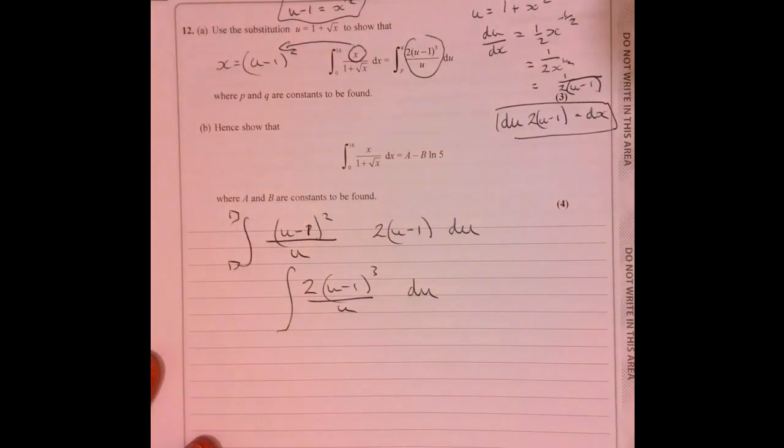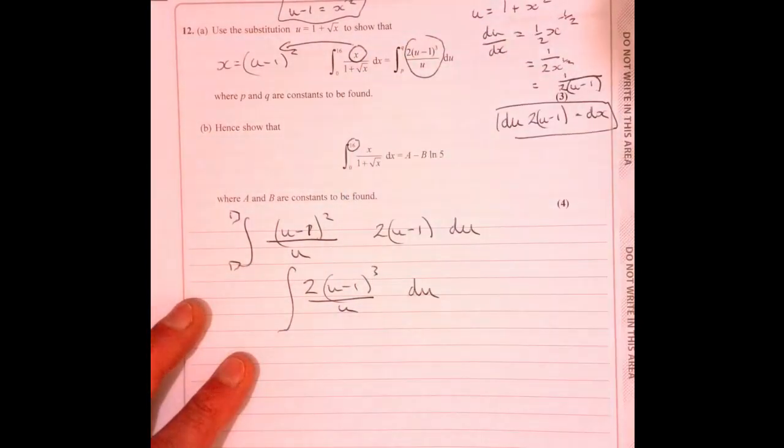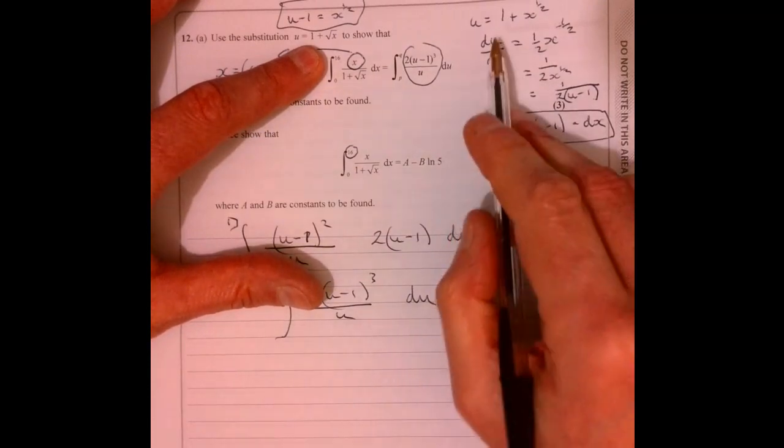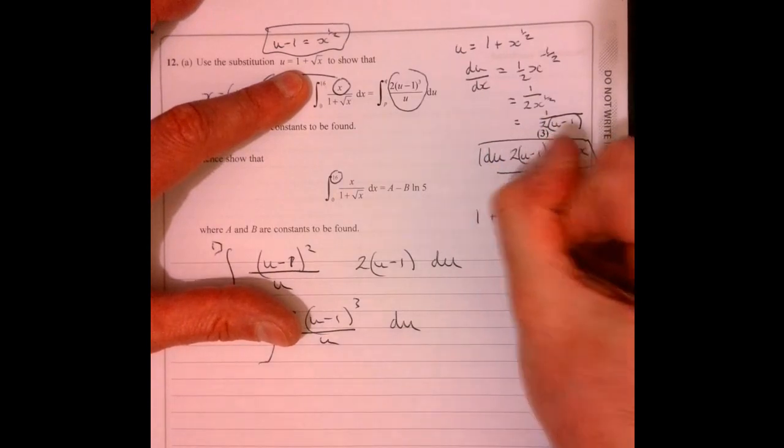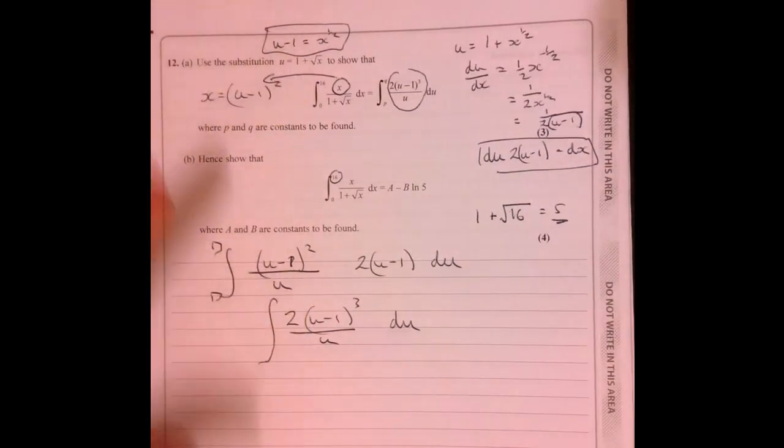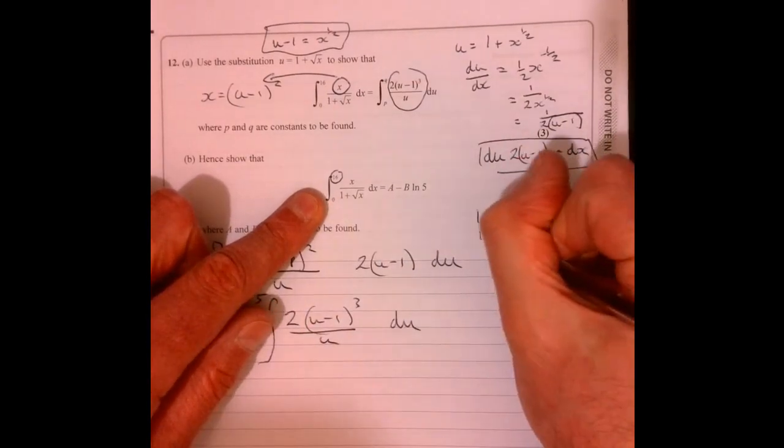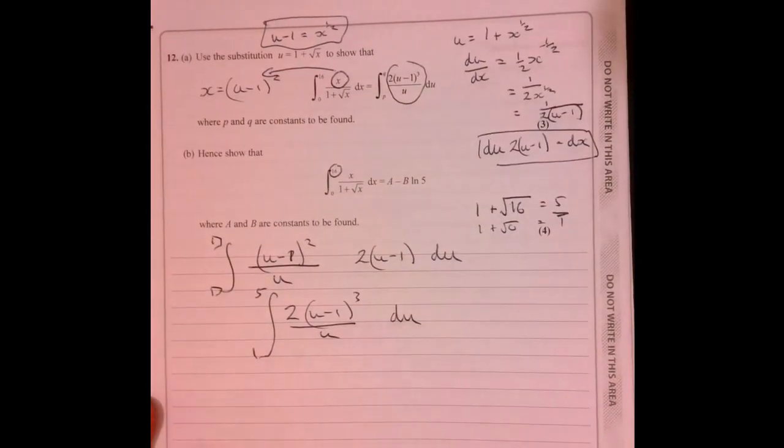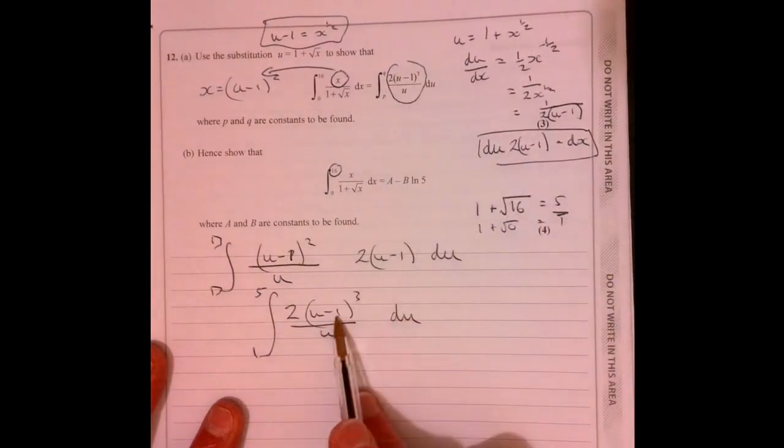Now what I've not done is I've not worked out what the new limits are. Well, let's have a look. Let's take that 16 that we had. Probably should be doing it from up here. So let's take that 16 and let's just feed it into this. So 1 plus root 16 is equal to 5. So that's going to be our first limit. And then when we've got 0, so 1 plus root 0 equals 1. So I'm going to put a 1 there. There we go. So we found out what our two limits are here. 5 and 1. And we've got to this stage here.